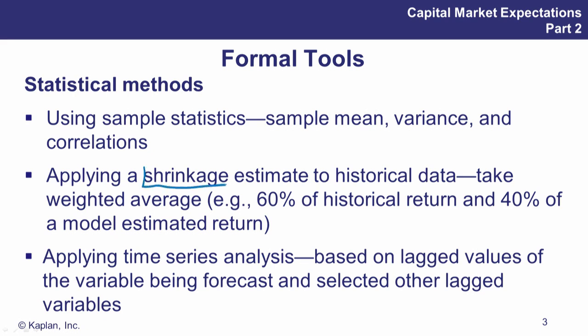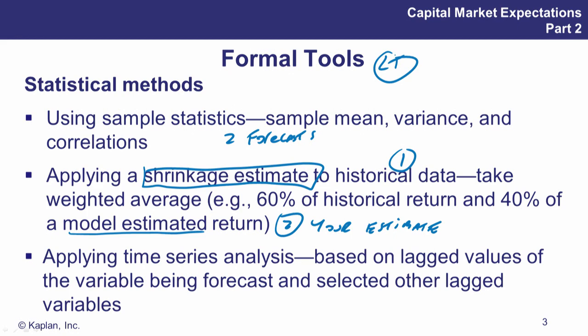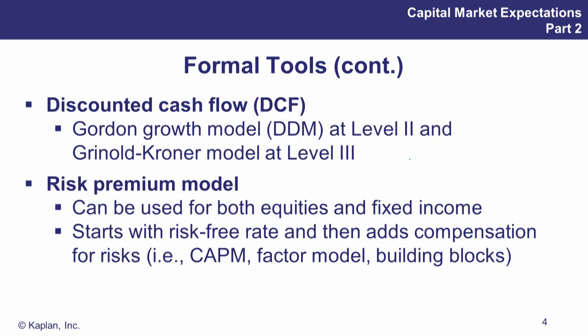They mention the famous shrinkage estimate, which is a fancy way of saying have two forecasts. Use two sources of data: one might be the historical data, and the other is your own estimate — which could be from perhaps a model. So the idea of shrinkage: having two heads better than one, two forecasts better than one, the idea of having a weighted average forecast. You often have a long-term historical estimate and then a very recent or short-term estimate, and combining these is not an unusual idea.